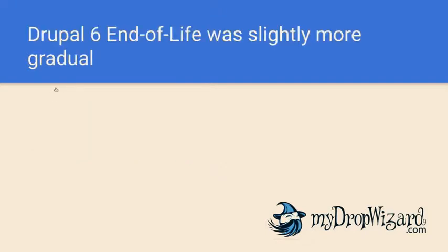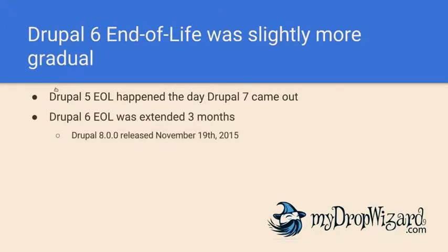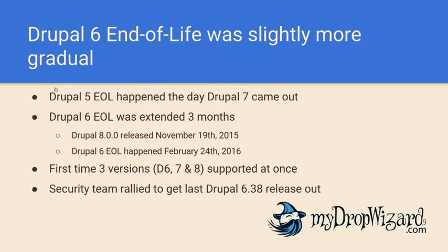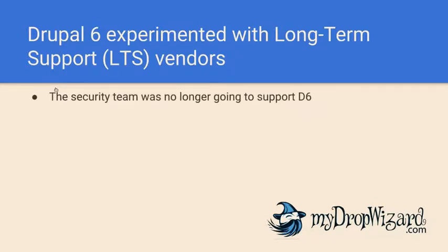The Drupal 6 end of life was slightly more gradual than previous ones. Drupal 5's end of life happened the day Drupal 7 came out, but Drupal 6's was extended three months: Drupal 8.0.0 was released November 19th, 2015, and the actual end of life happened February 24th, 2016. It was the first time three versions of Drupal were supported at once. The security team rallied to get one last Drupal 6 release out for that date. Drupal 6 also experimented with long-term support vendors.